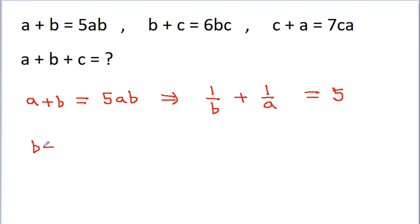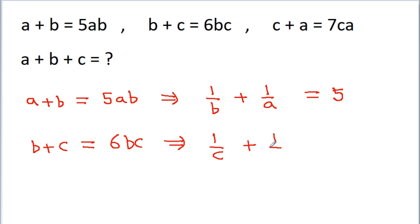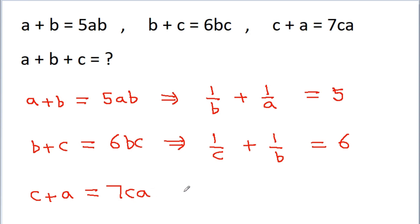We have given that b plus c is equal to 6bc, and if we divide both sides by bc then we get 1 by c plus 1 by b is equal to 6. We have given that c plus a is equal to 7ca, and if we divide both sides by ca then we get 1 by a plus 1 by c is equal to 7.